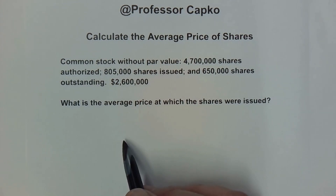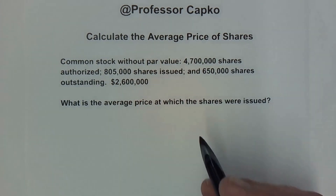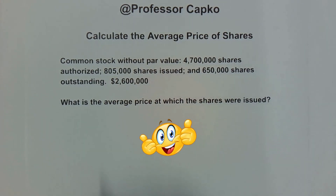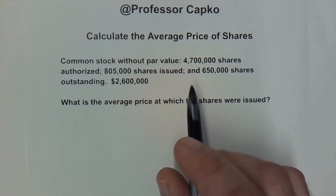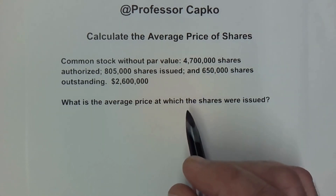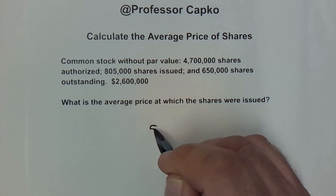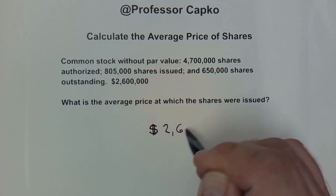Let's dig into this a little bit, but if you find that accounting is confusing and difficult, then give this video a thumbs up so I'll know to make more videos to make it clear to you. In this one, we need to figure out the average price of the shares. We know that the total amount that they were issued for is $2,600,000.